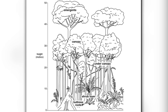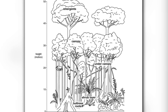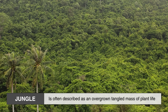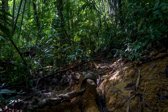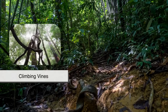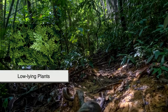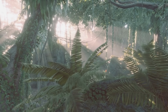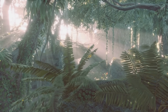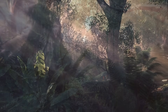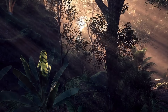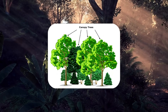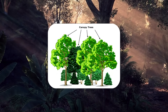The first major difference lies in the structure and density of vegetation. A jungle is often described as an overgrown, tangled mass of plant life. In jungles, thick underbrush, climbing vines, shrubs, and low-lying plants dominate the landscape. The vegetation is so dense that it can be difficult to walk through without a machete to clear the way.